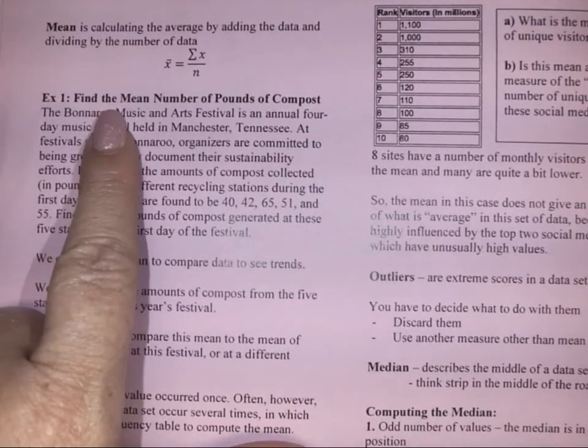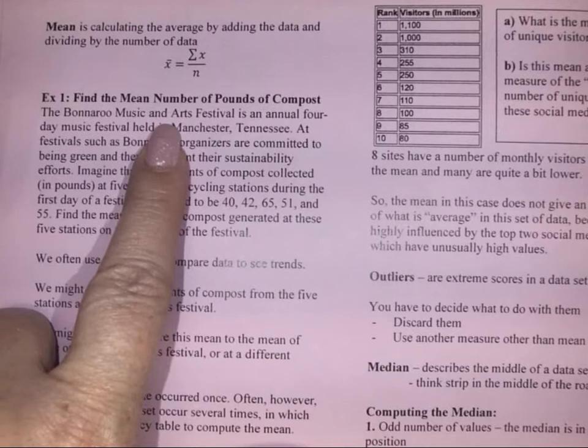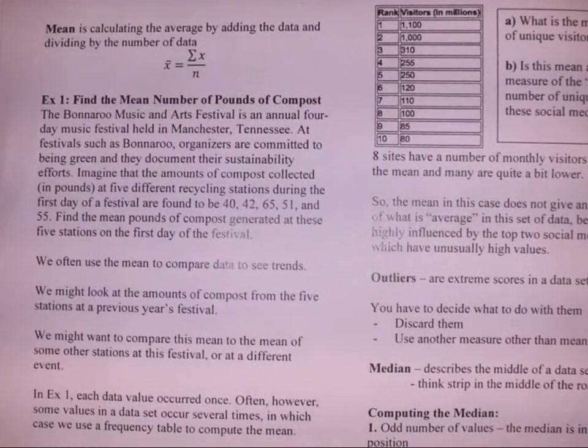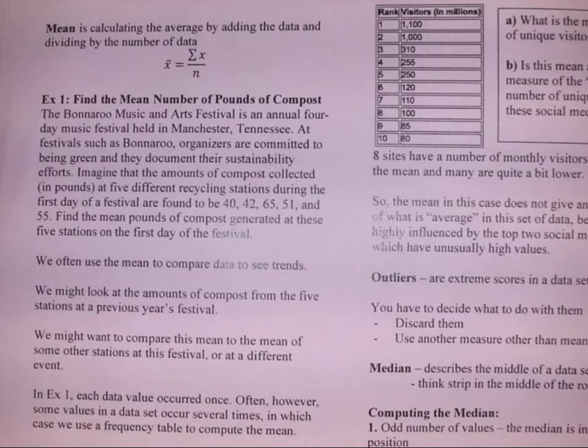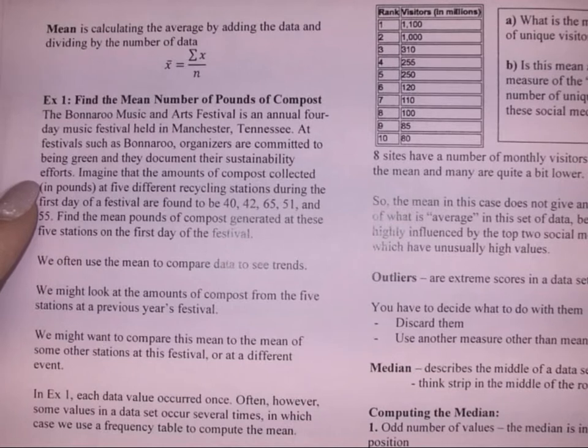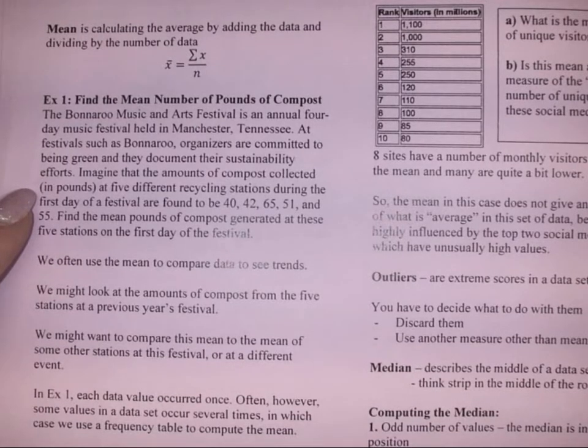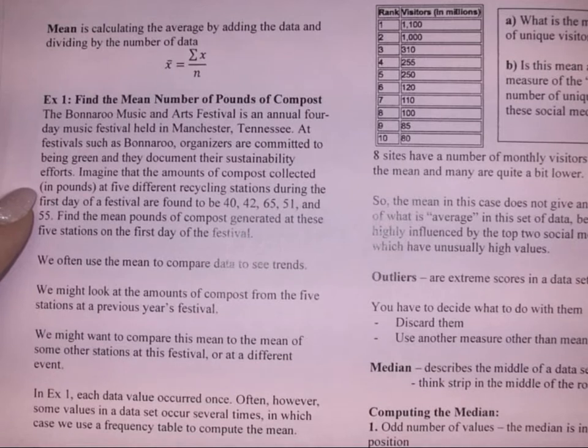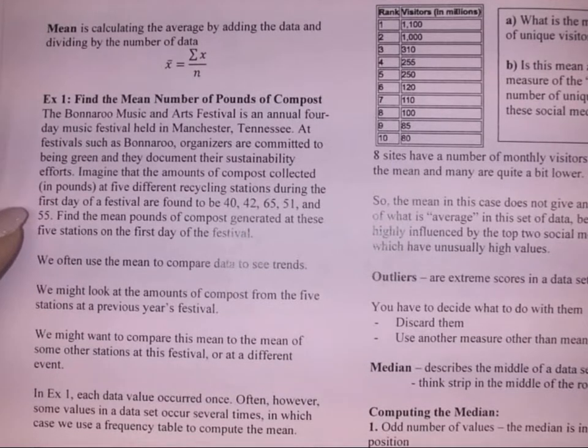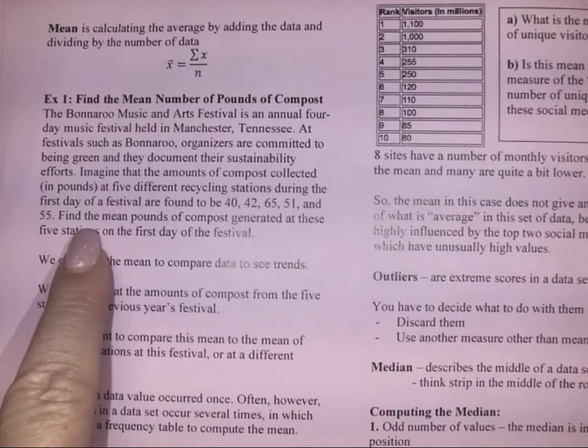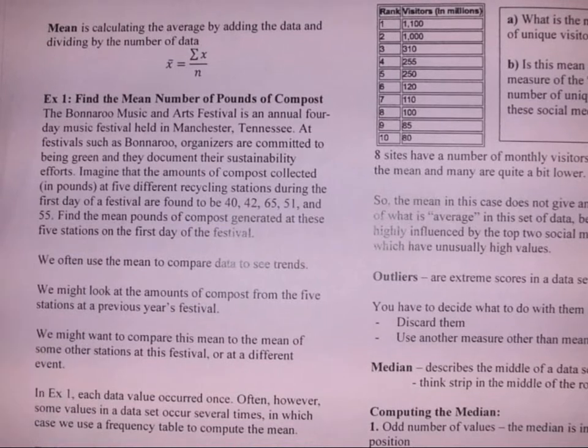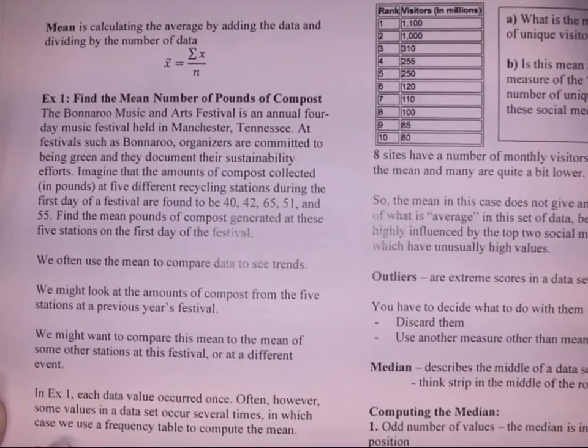For example one, we're going to find the mean of the number of pounds of compost at the Bonnaroo Music and Arts Festival, an annual four-day music festival held in Manchester, Tennessee. At festivals such as Bonnaroo, organizers are committed to being green and they document their sustainability efforts. Imagine that the amounts of compost collected in pounds at five different recycling stations during the first day of the festival are found to be these values.